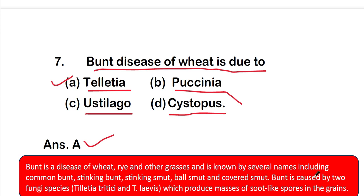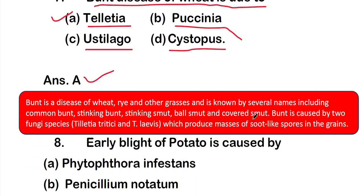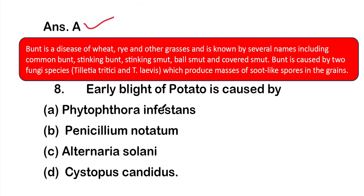Bunt disease affects wheat, rye, and other grasses and is known by several names including common bunt, stinking bunt, stinking smut, ball smut, and covered smut. It is caused by two fungal species, Tilletia tritici and Tilletia tritici laevis, which produce masses of spores in the grain.